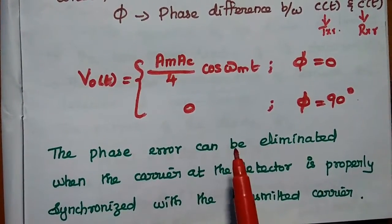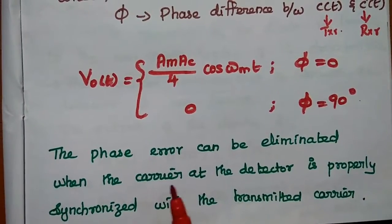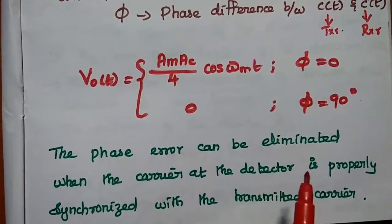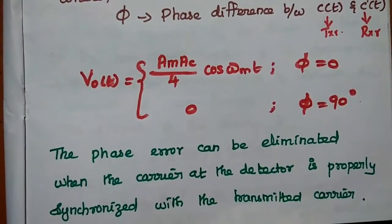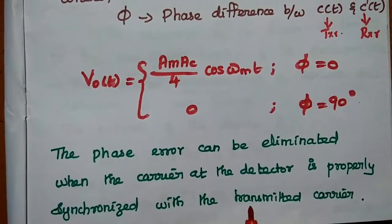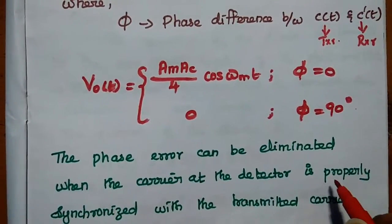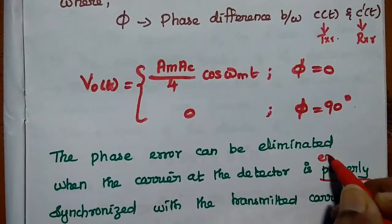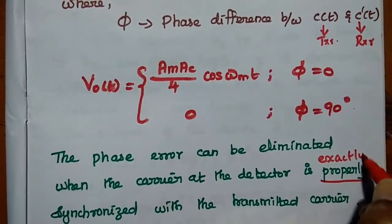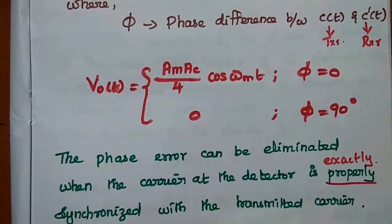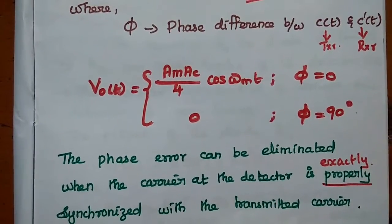The phase error can be eliminated when the carrier at the detector is exactly synchronized with the transmitted carrier, with no phase difference at all.